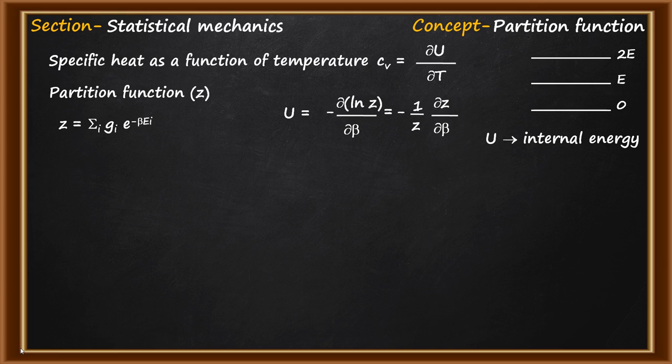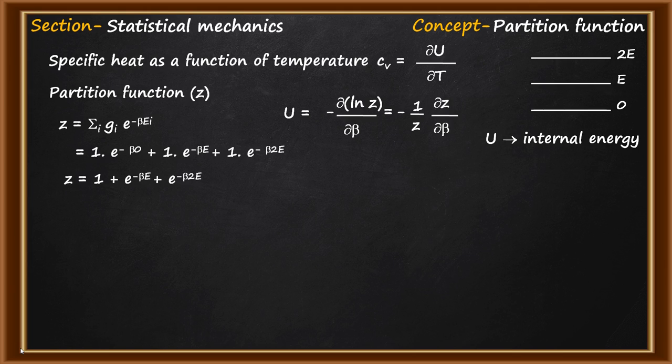Putting the energy values into the partition function expression: Z = 1·e^(β·0) + 1·e^(−β·E) + 1·e^(−β·2E). The first term simplifies to 1, so the partition function becomes Z = 1 + e^(−βE) + e^(−2βE). This is the expression for the partition function of our three-state system.